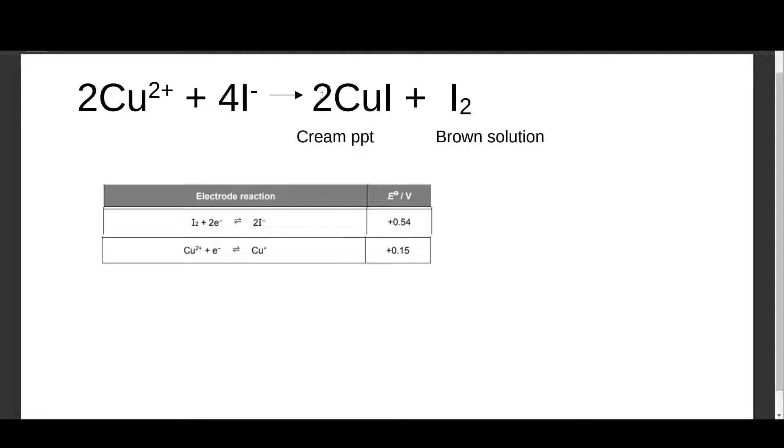Let's take a look at the E naught values of these redox reactions. We know that copper two will form copper one, so Cu²⁺ undergoes reduction to form Cu⁺, and the E naught value for this reduction reaction is 0.15. Then we have iodide forming iodine in this reaction, so the backward reaction occurs here. From I⁻ it forms I₂, so this is an oxidation reaction.